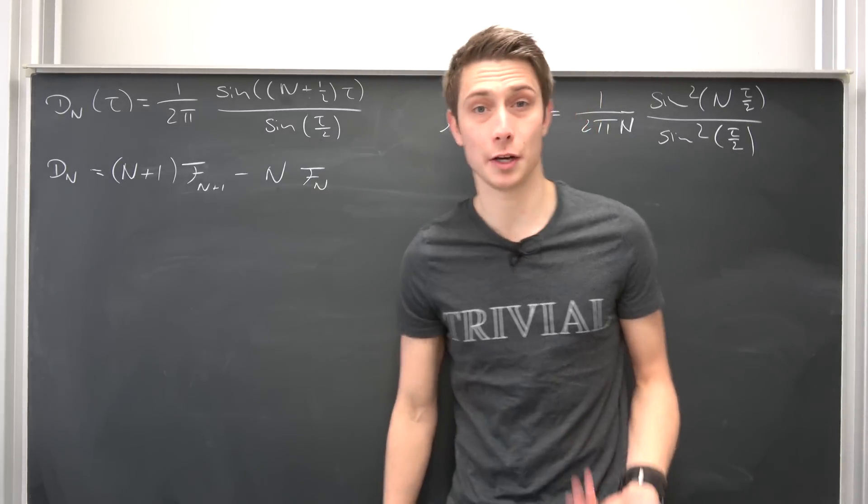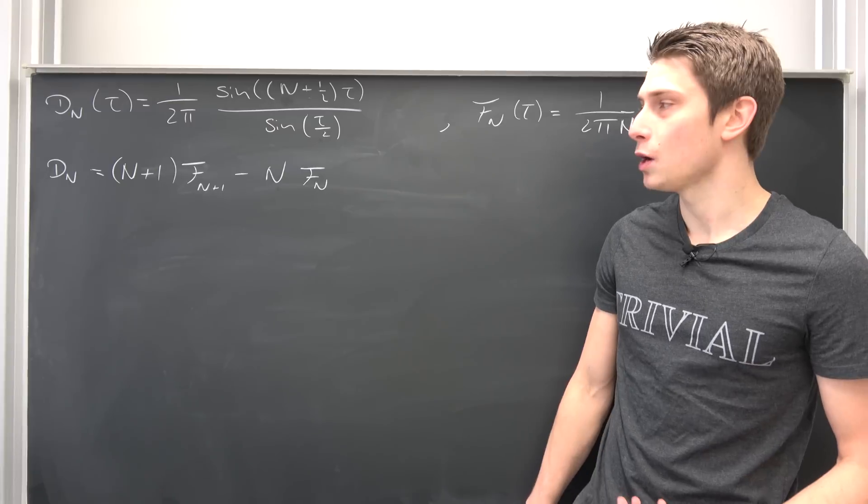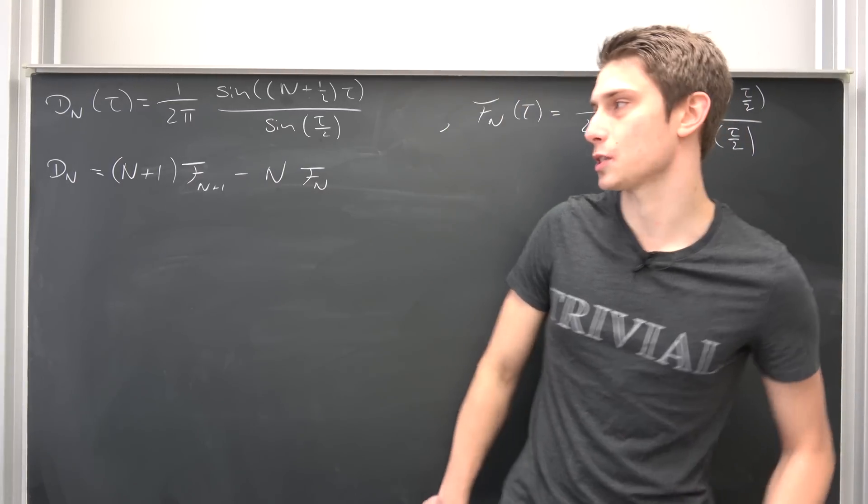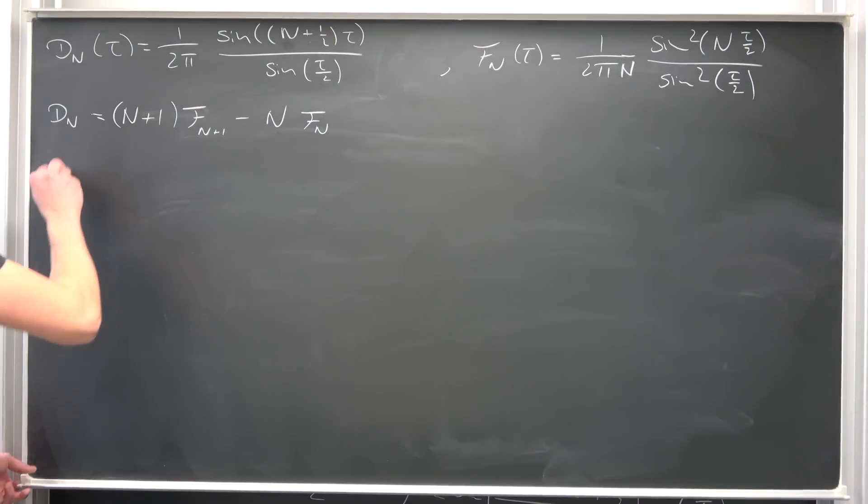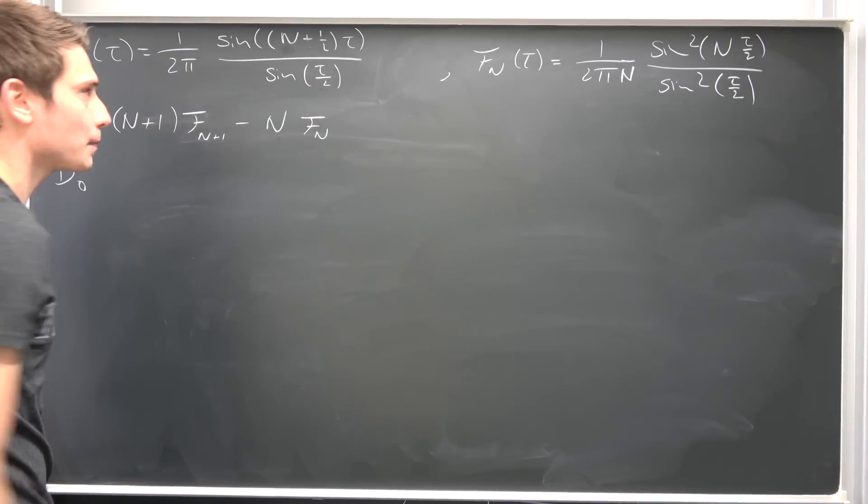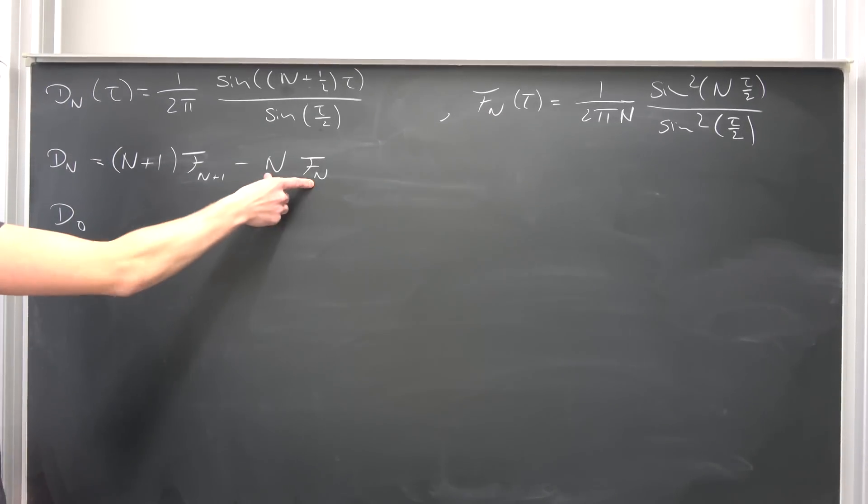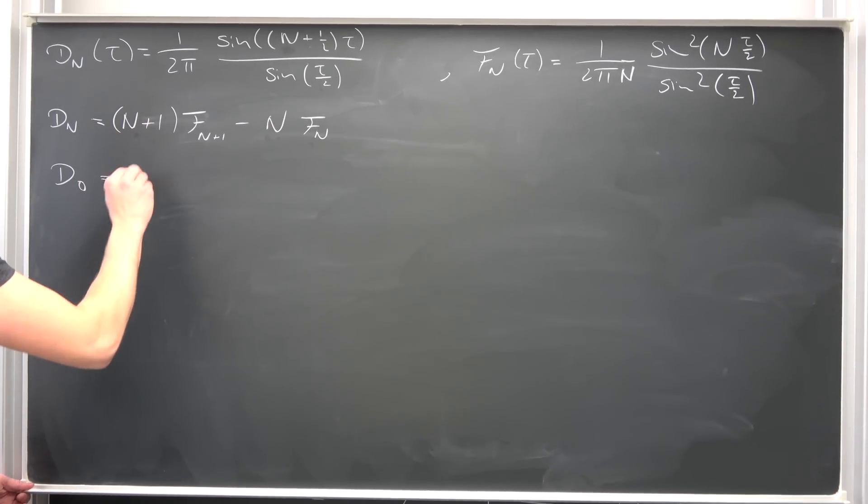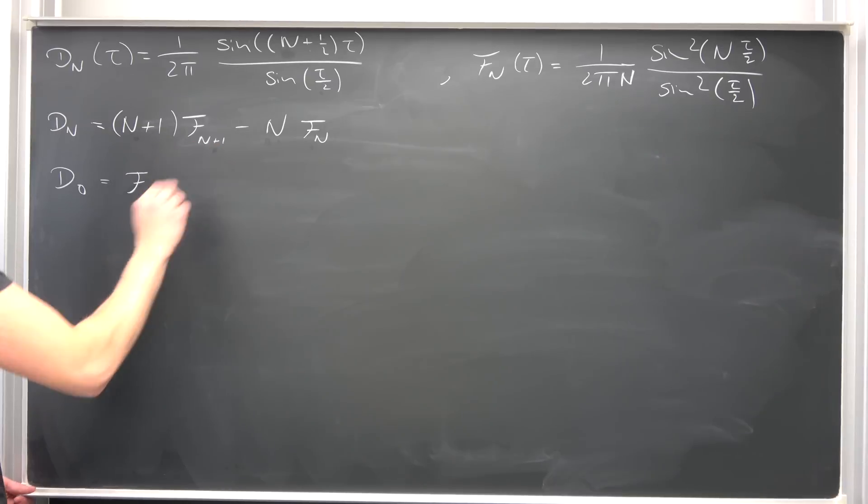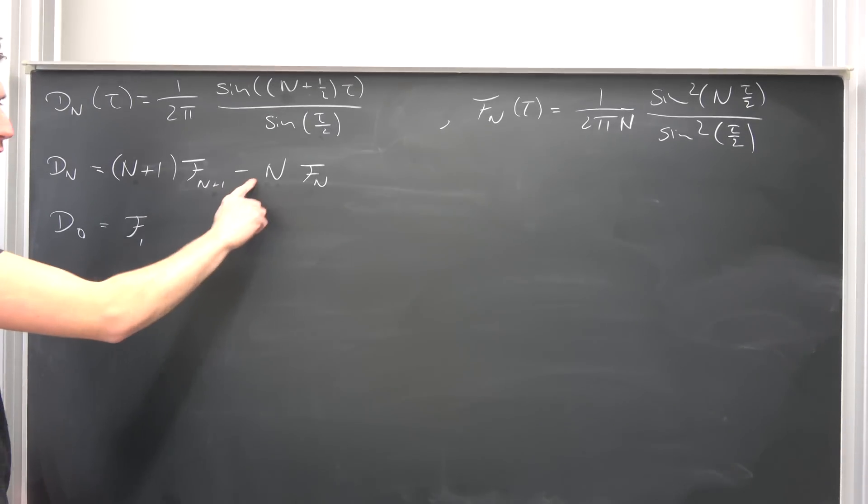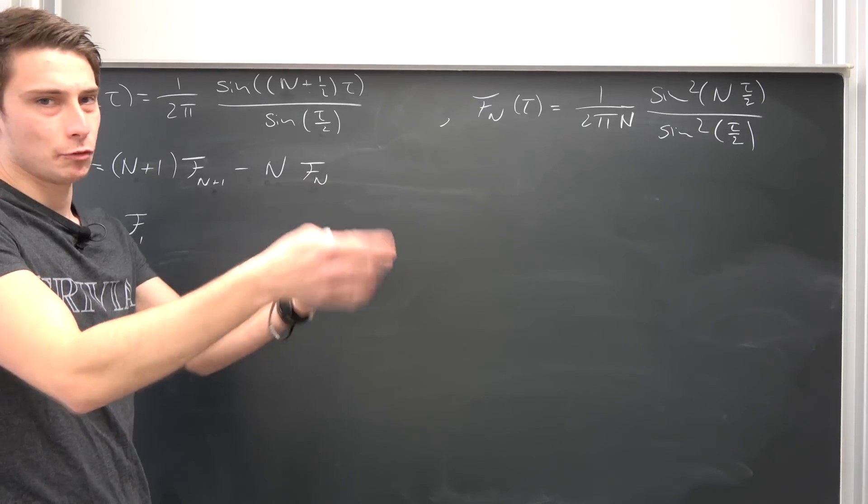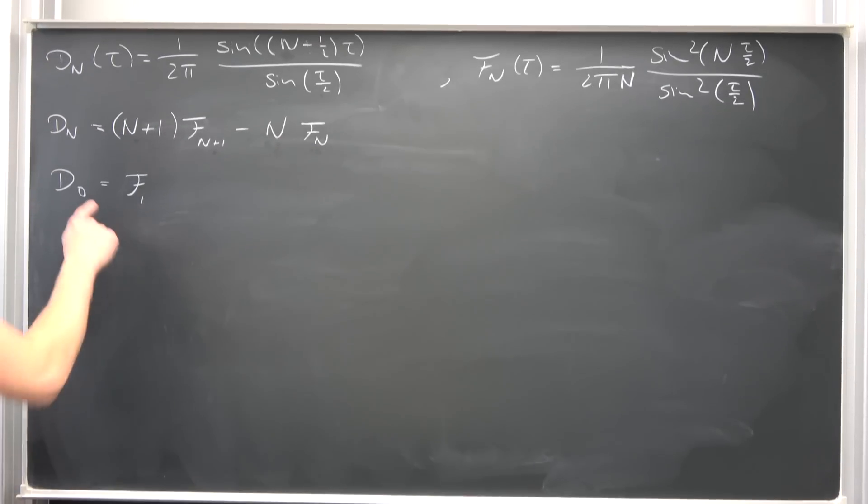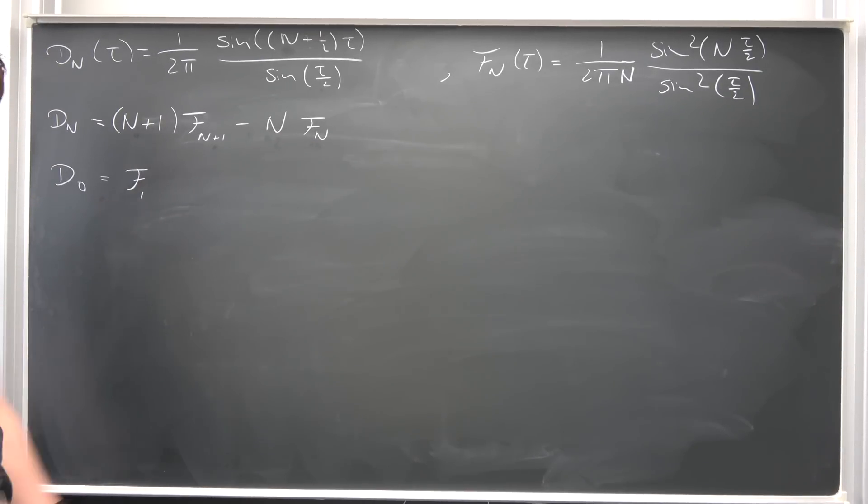As always with recursion we would like to plug in some initial values and see where this is going. Let's see if we can find a certain pattern in there. So why not start off with D_0 right here when n is equal to 0. So the Dirichlet kernel of the 0th degree, it doesn't quite matter what it is at the moment. But we can plug this stuff into here. So this is going to give us, where 0+1 is just 1, Fejer kernel of 1 minus 0 times Fejer kernel of 0, we really don't care. So this thing is just going to vanish. So D_0 is nothing but the first degree Fejer kernel.